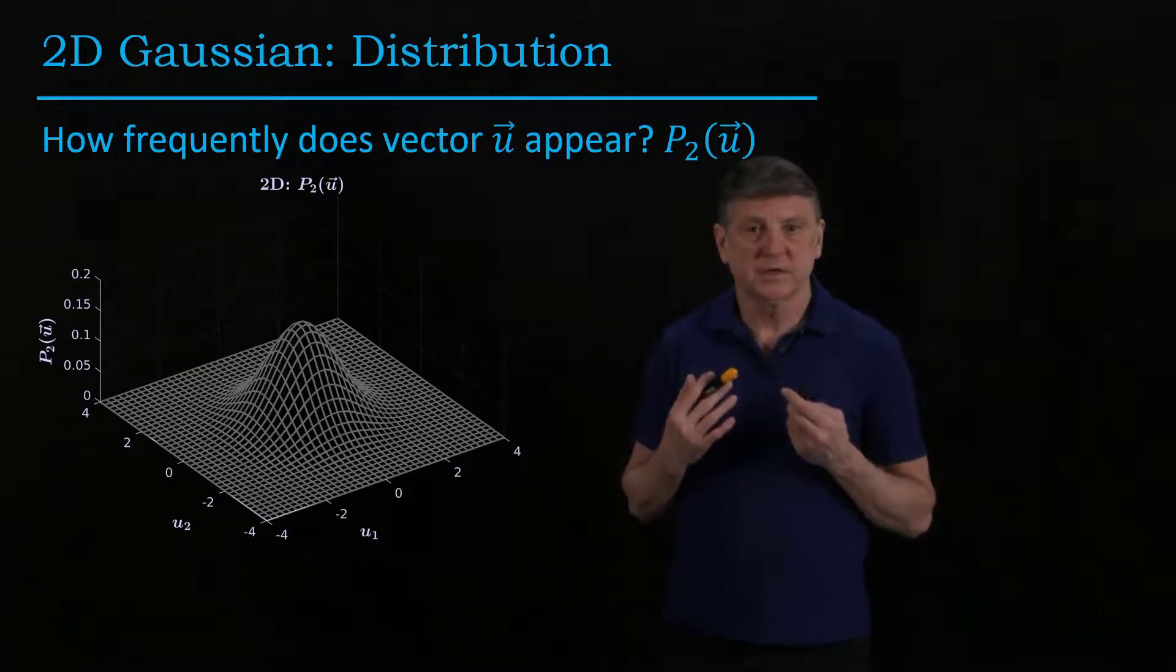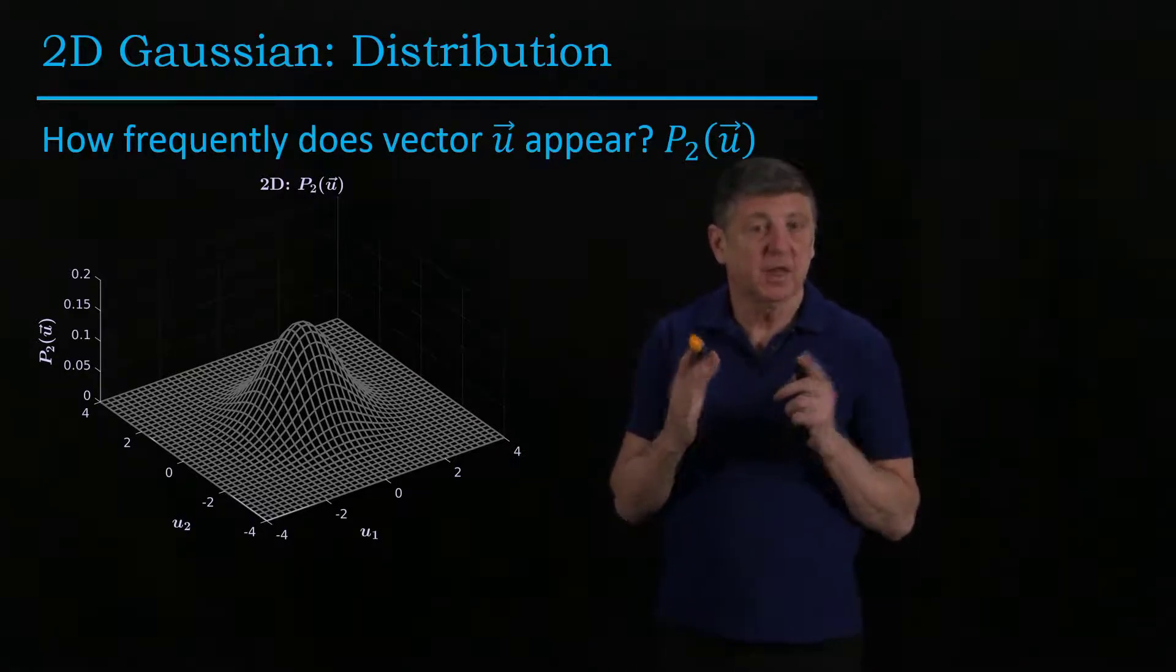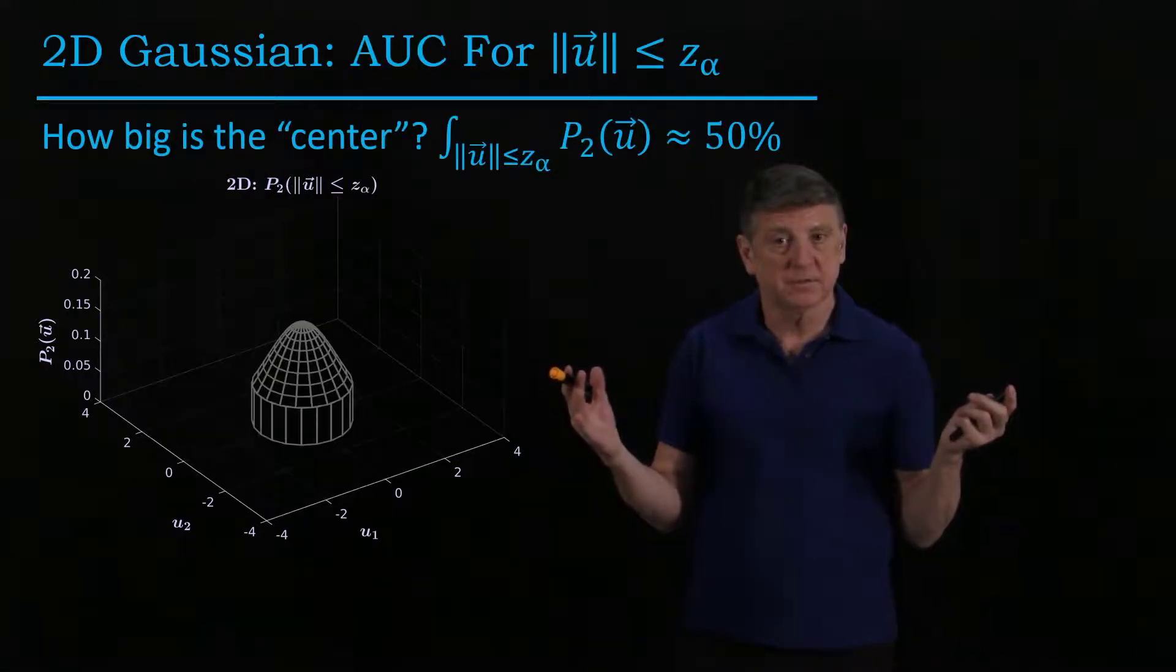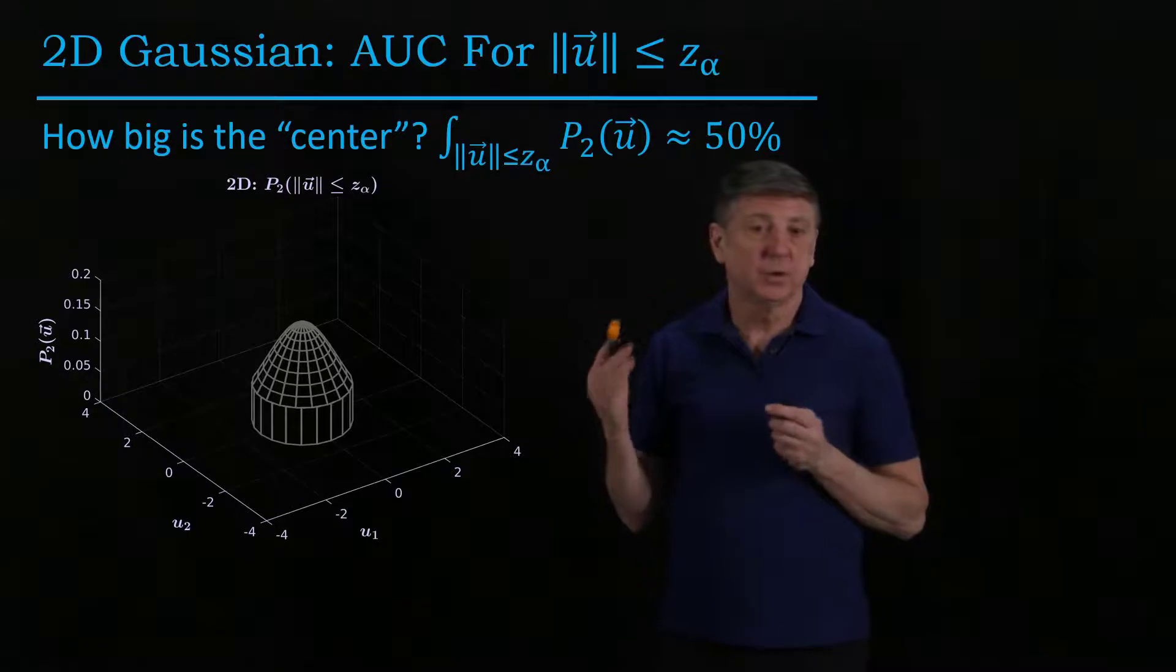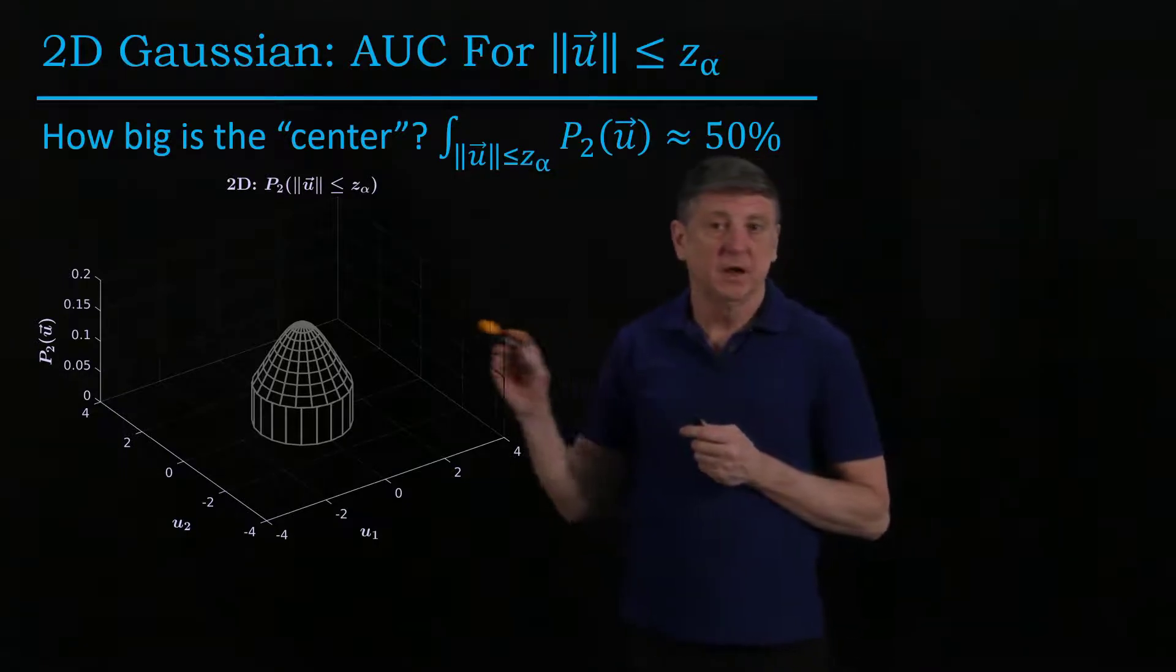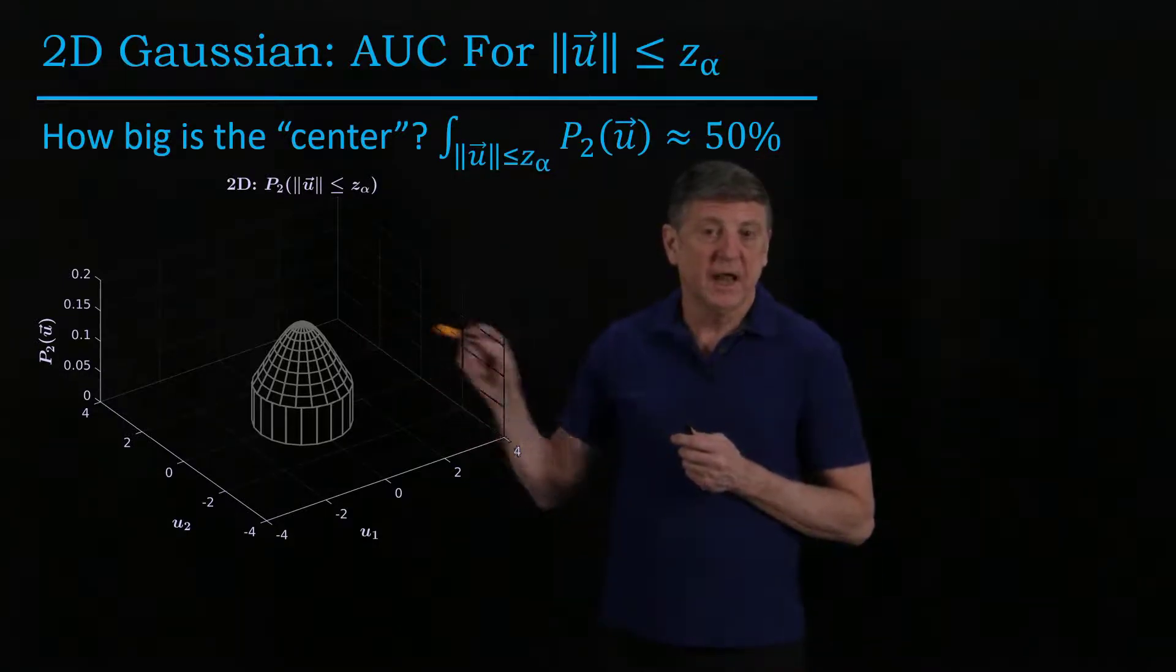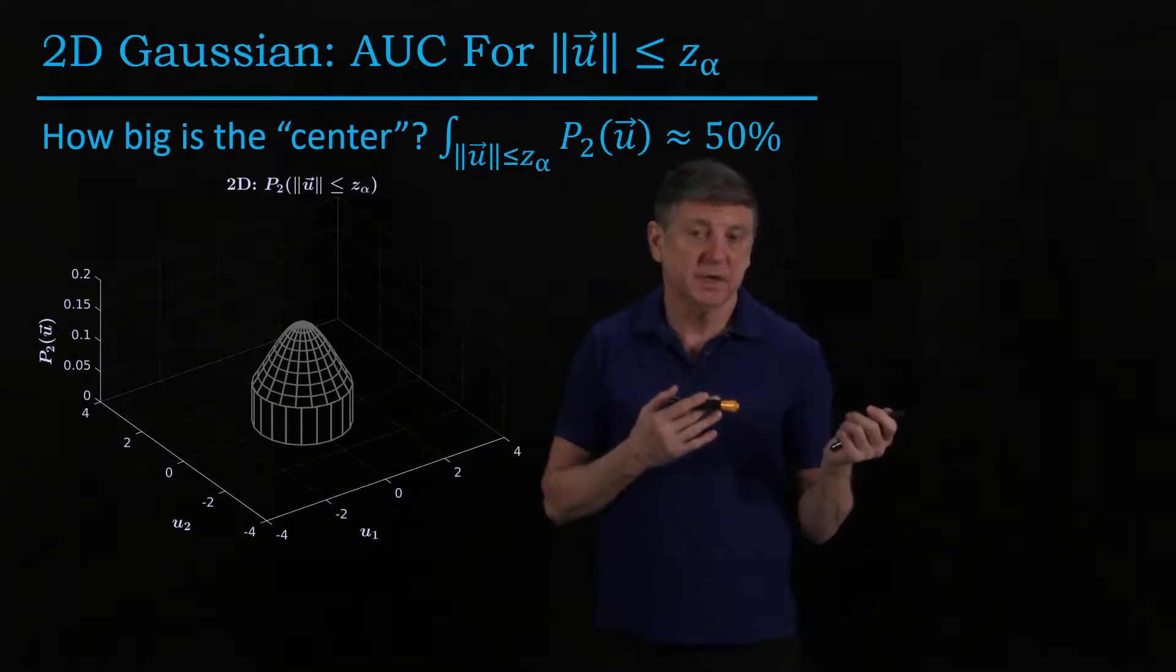So now a question is, how much of that is central, and how much is in the tails? Well, what we find is when we do this integration, that only 50% of the data are in the central portion, and that means that 50% have to be in the tails.